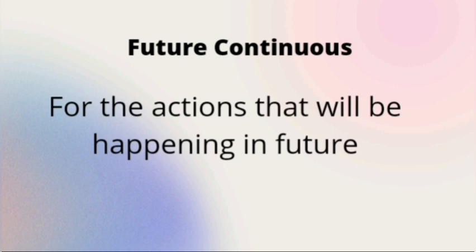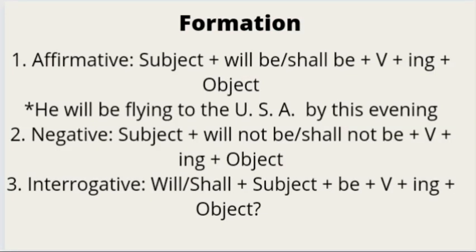Our next tense is future continuous. This tense is used for an action that will be happening in the future. For the formation: if your sentence is affirmative, it begins with subject, will be or shall be, verb plus -ing, and object — for example, he will be flying to the US by this evening.